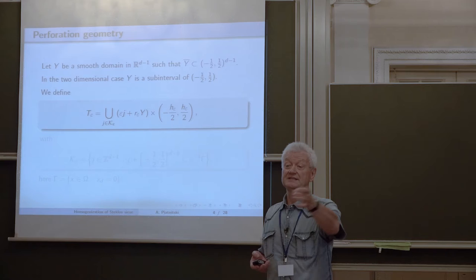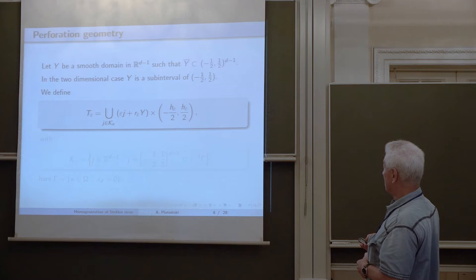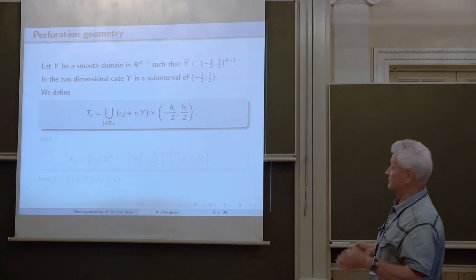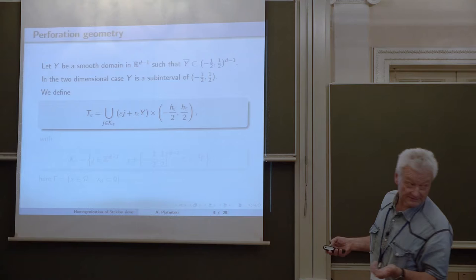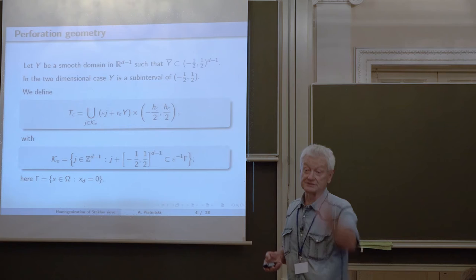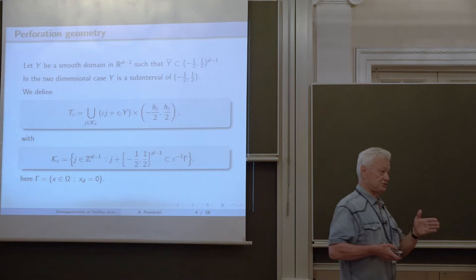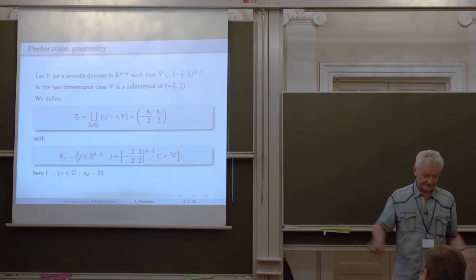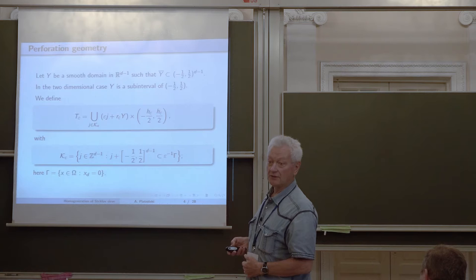The set T epsilon is the union of these cylinders in our interface. We multiply by H epsilon and Y to obtain a cylinder, then make integer shifts on the grid with coefficient epsilon. The set of indices is chosen such that the whole cylinder is inside the domain — we discard cylinders with non-trivial intersection with the exterior boundary, considering only those completely inside omega.